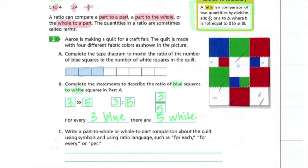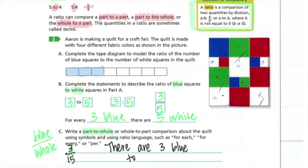C says write a part to whole or whole to part comparison about the quilt. Using symbols and using language such as for each, for every, or per. So how many blue squares were there? Three blue squares. And then it says part to whole. So blue is our part. And then we need to figure out our whole. So we had three blue. How many squares do we have all together? One, two, three, four, five, six, seven, eight, nine, 10, 11, 12, 13, 14, 15. So three to 15. But then it also wanted us to use ratio language. So we could say there are three blue to 15 total squares.